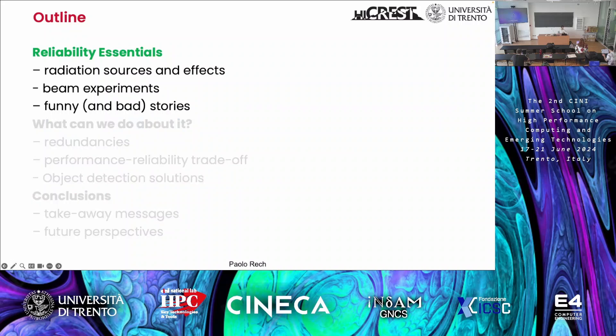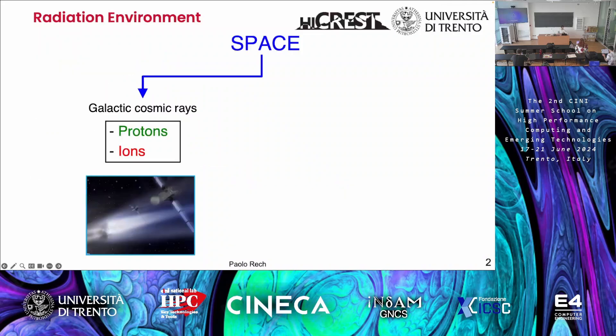Where does radiation come from? It comes from outer space. You have celestial bodies, explosions, or collisions that produce heavy atoms that wander around the universe. While wandering, they lose charge — either an electron or a proton — so they become ions. They are charged, and interacting with the magnetic field of different planets, they get accelerated until reaching giga or tera electron volts. These are the main problem of radiation in outer space.